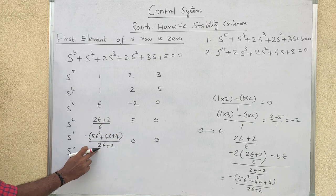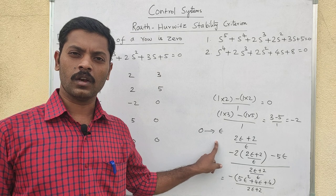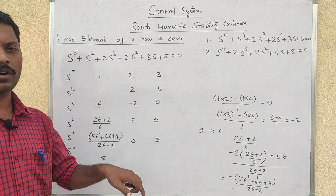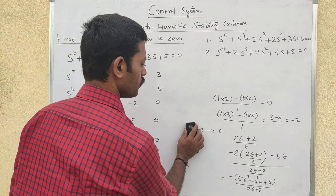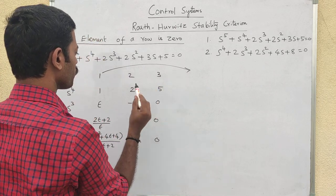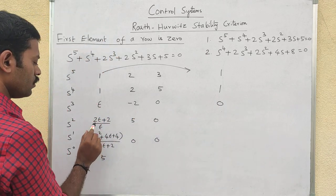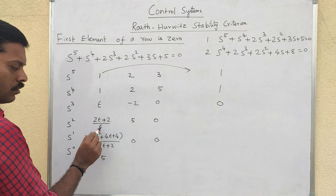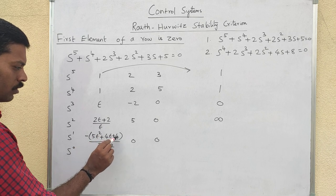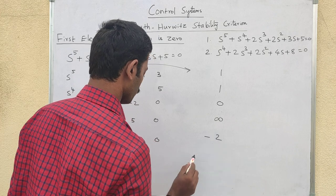Simplifying further: minus 5 epsilon squared plus 4, divided by 2 epsilon plus 2. As epsilon approaches zero, we get the S⁰ row result as 5. When epsilon is zero, we get 0 plus 2 divided by 0, which gives infinity. Then minus 5 epsilon gives minus 4 divided by 2, so minus 2. The result is 5.